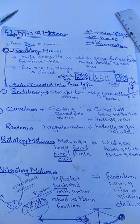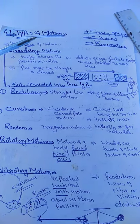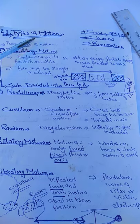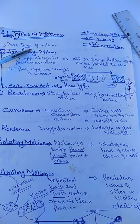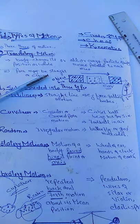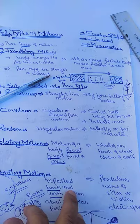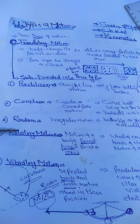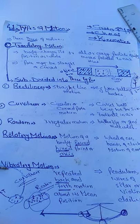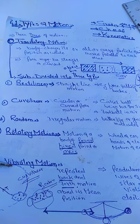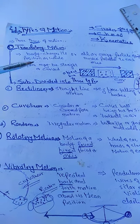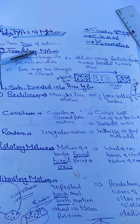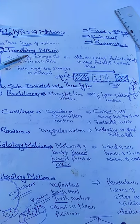Motion is classified into three types. The first type is translatory motion, the second type is rotatory motion, and the third type is vibratory motion. First of all we should know what is meant by translatory motion.